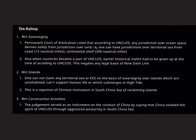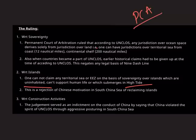In essence the ruling said that as per UNCLOS, any jurisdiction over ocean space derives solely from jurisdiction over land — that is, one can have jurisdiction over the territorial sea from the coast up to 12 nautical miles, and from the continental shelf up to 200 nautical miles. So by first constructing artificial islands and then claiming rights starting from those islands, China has violated UNCLOS principles. Additionally, when countries become part of UNCLOS, earlier historical claims must be given up, which essentially negates any legal basis for the nine dash line. The ruling also stated one cannot claim territorial sea or EEZ based on sovereignty over islands that are uninhabited, cannot support human life, or submerge at high tide — and many islands claimed by China do submerge during high tides. However, China has rejected this ruling, stating that since the Permanent Court of Arbitration has no enforcement mechanism, it will not follow this ruling.